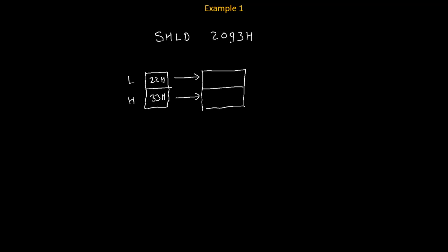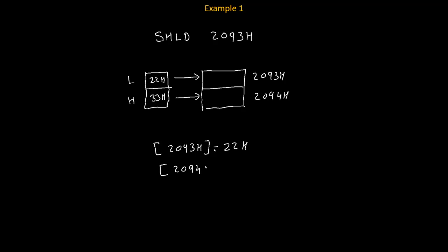We will check two consecutive memory locations: 2093H and 2094H. The content of the L register will get copied to the given memory location 2093H, so after execution, 22H will be stored at 2093H. The content of the H register, which is 33H, will get copied to 2094H. So the content of L goes to the given address and the content of H goes to the next address.